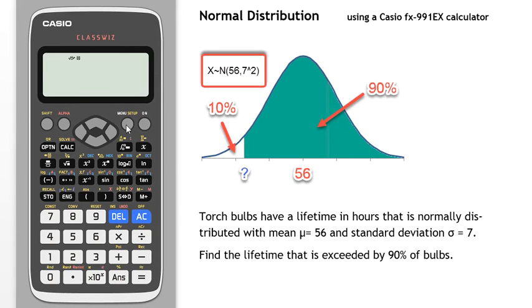First we go to menu and select number seven distributions, and this time we want the inverse normal which is number three.